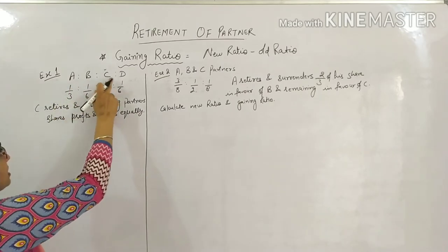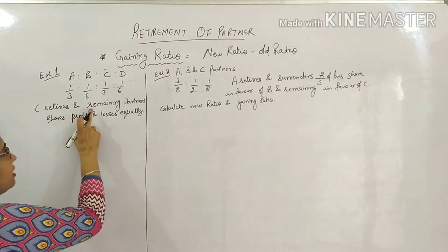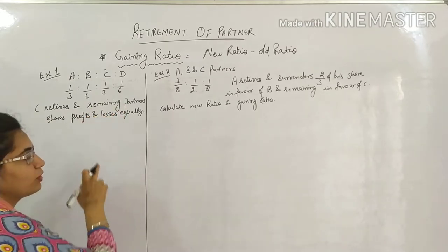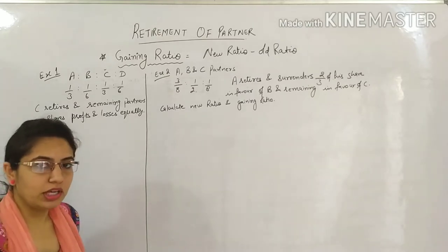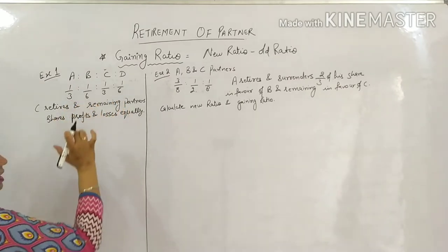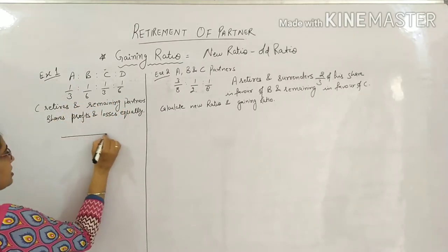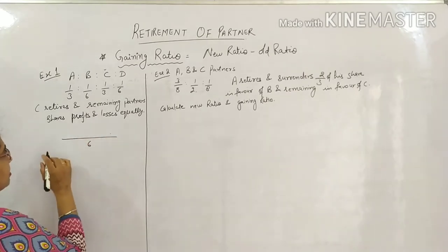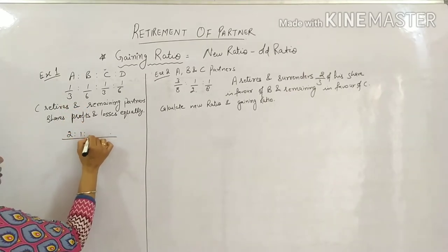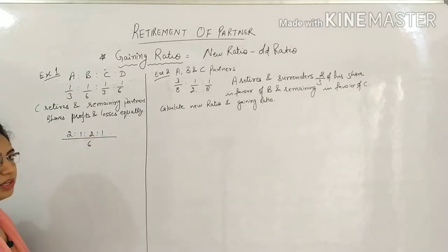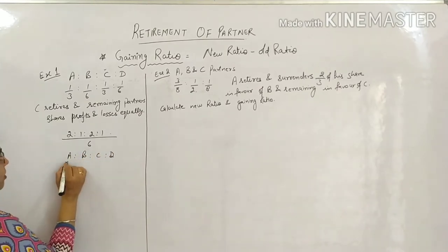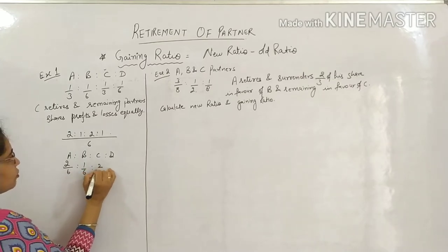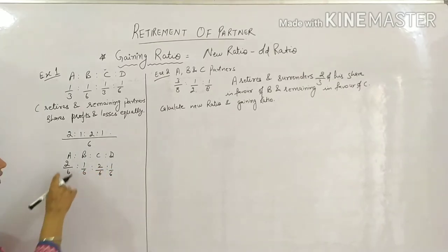Let's take an example: A, B, C, D are partners with this ratio. C retires and remaining partners share profit and losses equally. After C retires, the remaining partners' profit sharing ratio will become equal. First thing is the denominator should be same, which it isn't. So make the denominator same by taking LCM. Taking LCM of 6, you get 3, 2, then 1, 3, 2 and 1. This becomes your old ratio: 2 by 6, 1 by 6, 2 by 6 and 1 by 6. One thing to note - the total of all these should equal the bottom number.